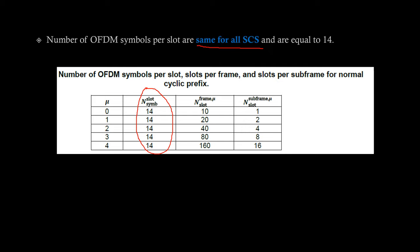So, as number of symbols in a slot are same for all numerologies which implies that slot length will reduce for higher subcarrier spacings. So, as symbol length, symbol length reduces with increasing subcarrier spacing. So, that means slot length will also reduce with subcarrier spacing as there are fixed number of symbols in a slot.